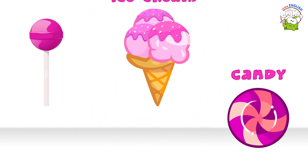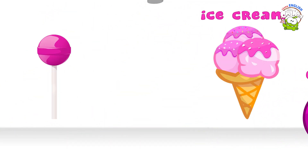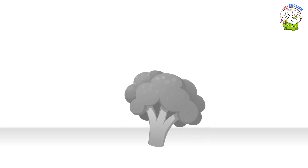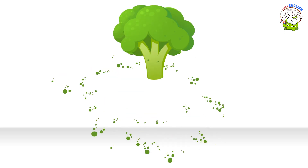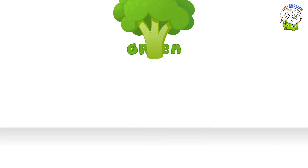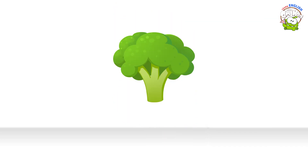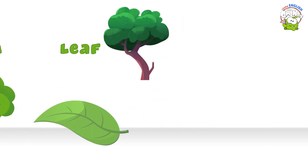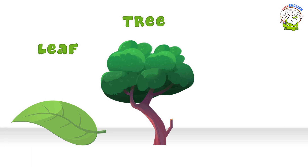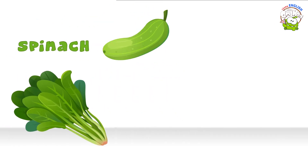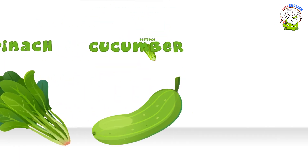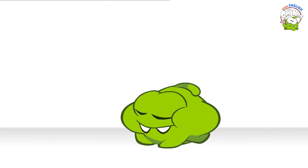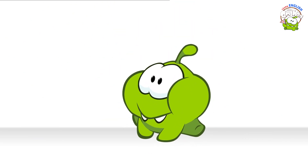just like a dream! What color is the broccoli? Green, the broccoli is green. Like a leaf and the trees, like spinach, cucumber, lettuce and peas. And Omnom!